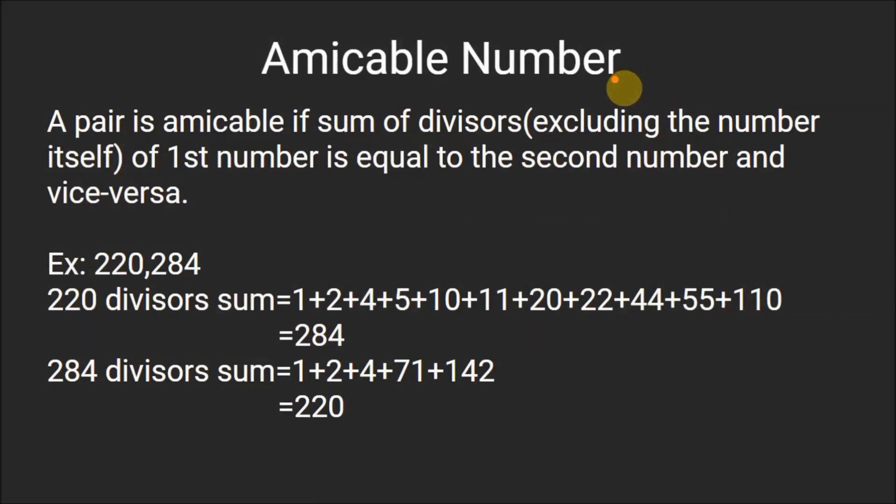So what is an amicable number? A pair is amicable if sum of the divisors of first number is equal to the second number and vice versa.